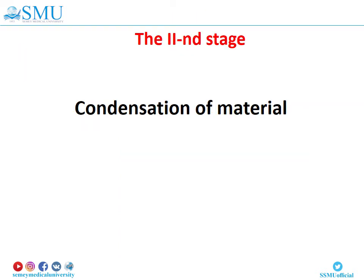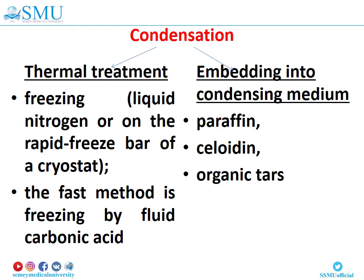Stage number 2: Condensation of material. Condensation is reached by two methods – thermal treatment and embedding into condensing medium. Thermal treatment means freezing by, for example, liquid nitrogen or on the rapid-freeze bar of a cryostat. Condensing mediums can be paraffin, celloidin, or organic resins.